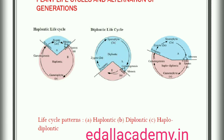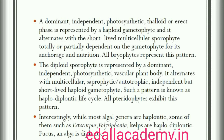Bryophytes and pteridophytes exhibit an intermediate condition — haplodiplontic — where both phases are multicellular. However, they differ in their dominant phases. In bryophytes, a dominant, independent, photosynthetic, thaloid or erect phase is represented by a haploid gametophyte; it alternates with the short-lived multicellular sporophyte, which is totally or partially dependent on the gametophyte for its anchorage and nutrition. In pteridophytes, the diploid sporophyte is represented by a dominant, independent, photosynthetic, vascular plant body; it alternates with multicellular, saprophytic, autotrophic, independent but short-lived haploid gametophyte — this pattern is known as haplodiplontic life cycle. Interestingly, while most algal genera are haplontic, some of them such as Ectocarpus, Polysiphonia and kelps are haplodiplontic, while Fucus among algal genera is diplontic.